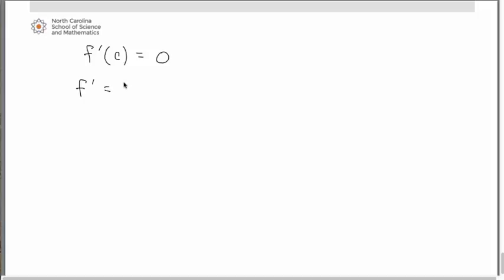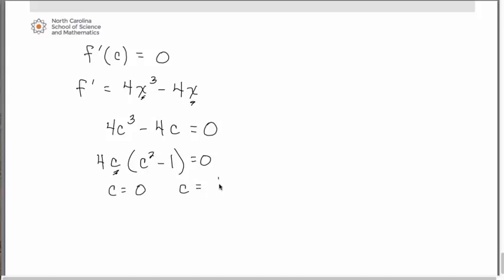The derivative is 4x³ - 4x. If we substitute c in place of our x values, we get 4c³ - 4c = 0. So let's go ahead and factor it. We have a difference of two squares. The c values we get are c = 0 from this factor out here, and then c equals either positive or negative 1.